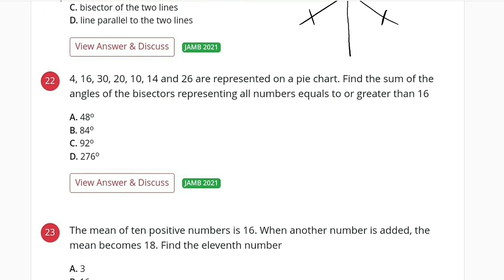Question number 22. We are given some numbers here: 4, 16, 30, 20, 10, 14, and 26 are represented on a pie chart. We are asked to find the sum of the angles of the bisectors representing all numbers equal to or greater than 16.